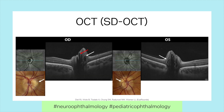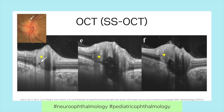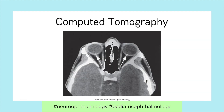OCT using a line scan through the optic nerve may reveal hyporeflective drusen. Enhanced depth imaging and swept source OCT techniques allow for better visualization of buried drusen. CT is not used to evaluate Optic Disc Drusen but may be used to rule out intracranial or optic nerve tumors.